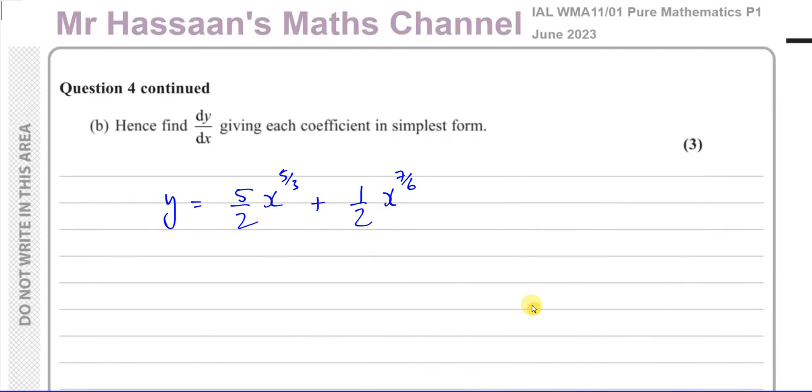Now, for part B, it tells us hence - means use what we just found - find dy dx, giving each coefficient in its simplest form.